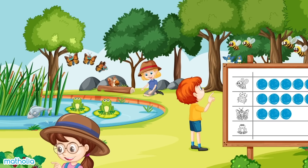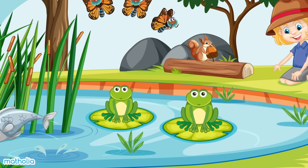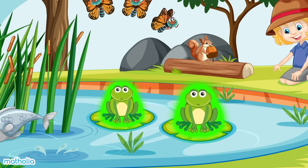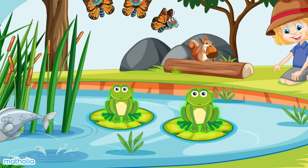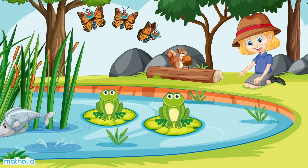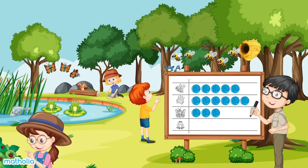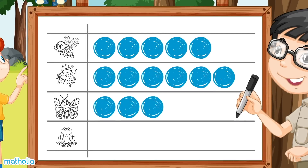Look at the frogs in the pond. How many are there? One, two. There are two frogs. Let's draw two circles on our picture graph.